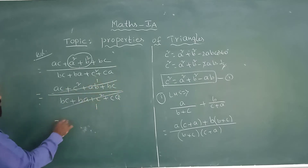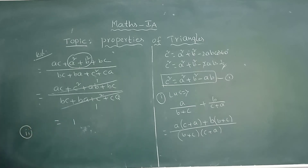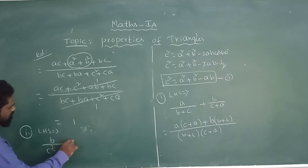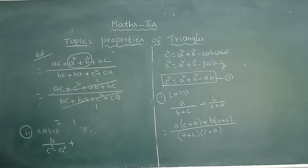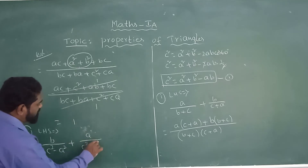So numerator = C² + AB + BC + CA and denominator = BC + BA + C² + CA. All terms are the same, so the result equals 1. For the second question, the LHS is B/(C²-A²) + A/(C²-B²).